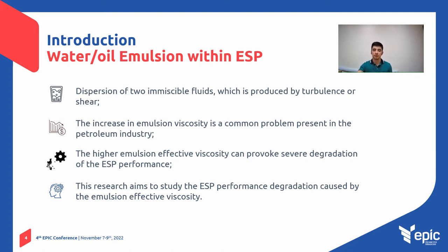An emulsion is composed of a dispersed phase and a continuous phase, formed by dispersion of two immiscible fluids, which is produced by turbulence or shear. The increase in emulsion viscosity is a common problem present in the petroleum industry.